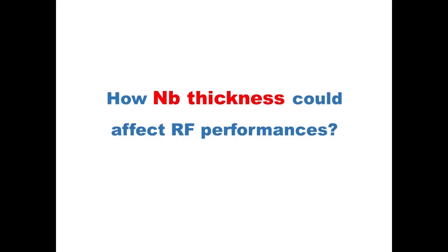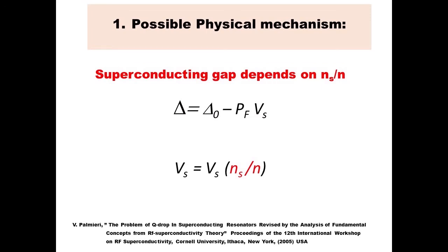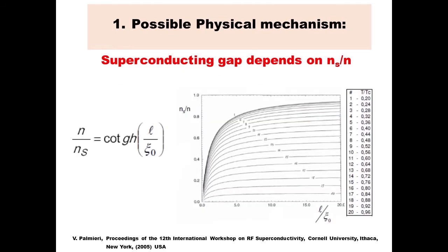How could niobium thickness affect RF performance? There are three possible mechanisms. The first mechanism, reported in one of my papers presented at Cornell in 2005, shows from fundamental theoretical considerations that the superconducting gap is decreased by the velocity of superelectrons. If you have a high velocity of your superfluid — meaning a high current or high accelerating field — there is a gap depression. The velocity of superelectrons depends on the fraction of superelectrons, which in turn depends on the ratio of mean free path over coherence length.